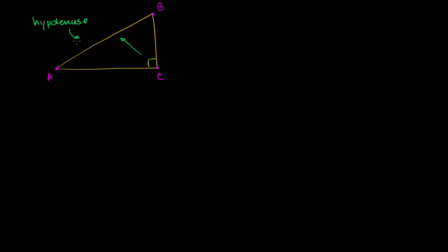It's good to know that, because someone might say hypotenuse and you'll know they're just talking about the longest side — the side opposite the 90 degree angle. What I want to do in this video is prove a very famous relationship between the lengths of the sides of a right triangle.